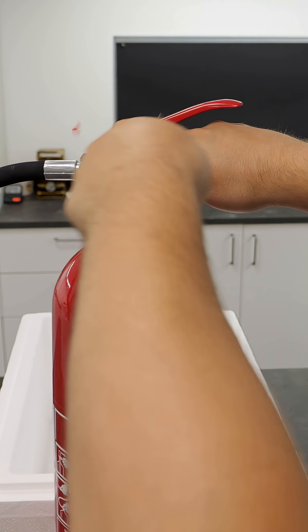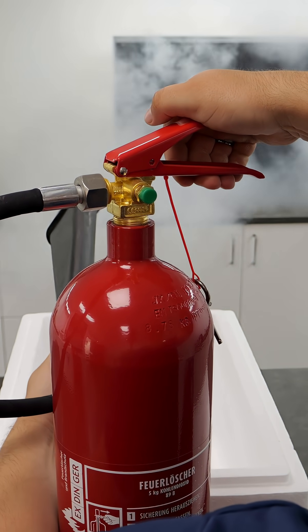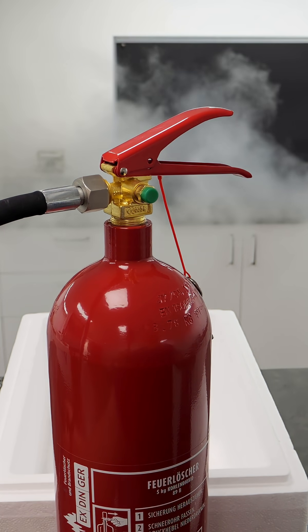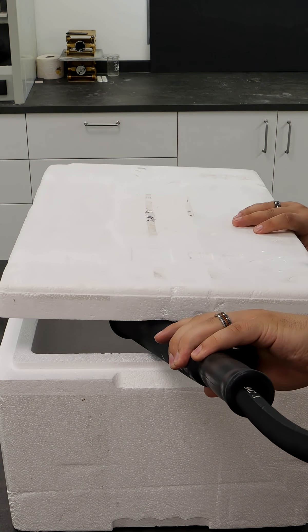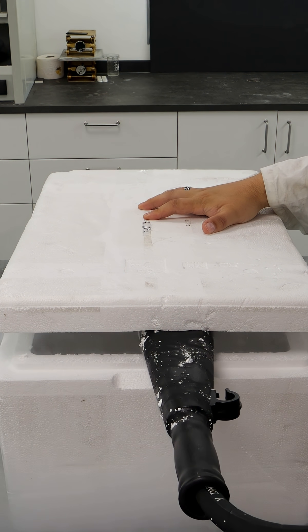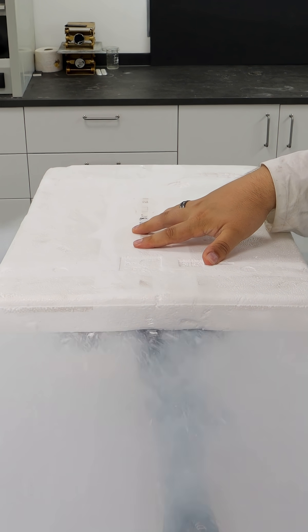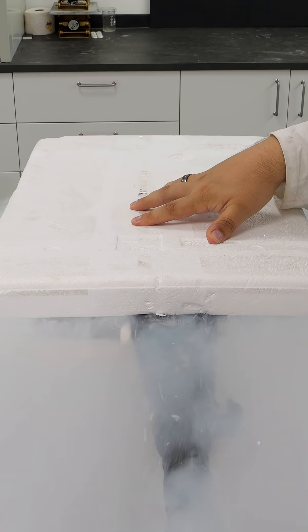Now I'm going to show you firsthand just how long, or rather how short, a big fire extinguisher actually stays functional. This fire extinguisher contains 5 kilograms of carbon dioxide, and at minus 78 degrees Celsius, it solidifies into what we call dry ice. Now I'll show you just how quickly a large fire extinguisher runs out of power. If I go full throttle on my styrofoam box, I'll get dry ice. But why?